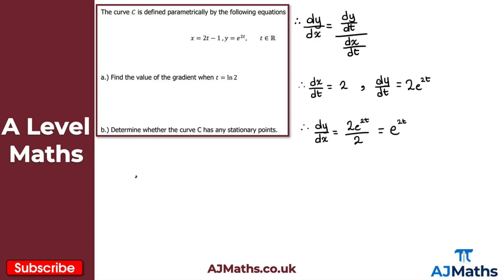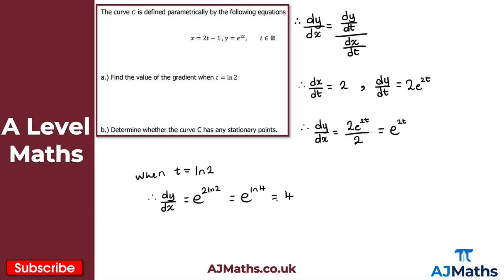We substitute t = ln 2 into dy/dx = e^(2t), giving e^(2 ln 2). Using the power rule of logarithms, 2 ln 2 = ln 4, so we get e^(ln 4). Since exponentials and logarithms are inverses of each other, they cancel and we get 4. So the value of the gradient when t = ln 2 is 4.